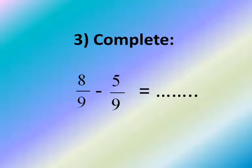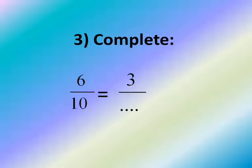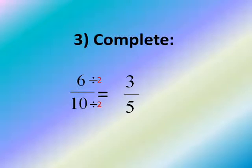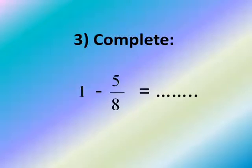Subtraction — we always subtract in the numerator: 8 minus 5 equals 3, so the fraction is 3 over 9. For simplification, divide by 2 up and down: 6 divided by 2 equals 3, and 10 divided by 2 equals 5. So the fraction is 3 over 5.